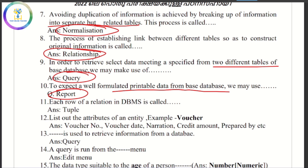In DBMS, we call one row a tuple. Then, attributes of an entity — an entity has attributes.